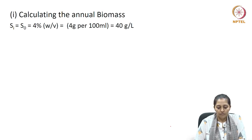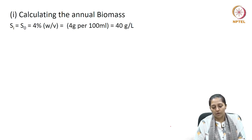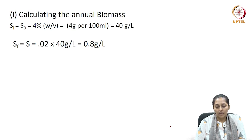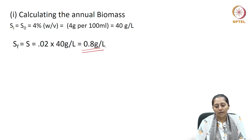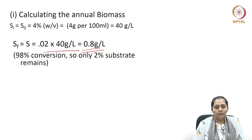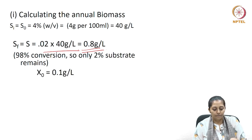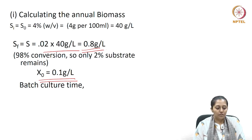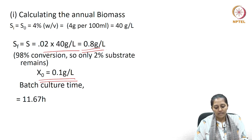The initial substrate concentration corresponds to 40 grams per liter of methanol. The final substrate concentration is also known: since 98 percent is converted, 2 percent remains, so the residual substrate concentration is 0.8 grams per liter. The initial biomass concentration was given as 0.1 grams per liter. From these, we can calculate the batch time, which is given as 11.67 hours.